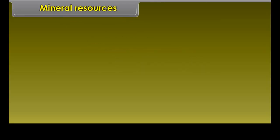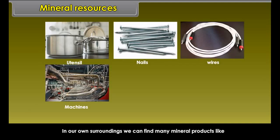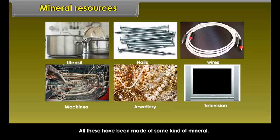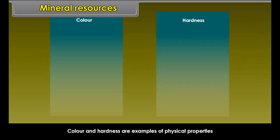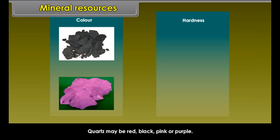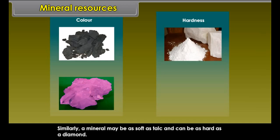Mineral Resources. In our own surroundings we can find many mineral products like utensils, nails, wires, machines, jewelry and television. All these have been made of some kind of mineral. What are Minerals? Minerals are the natural substances having definite chemical composition and physical properties. Color and hardness are examples of physical properties. Coal is black or brown, quartz may be red, black, pink or purple. A mineral may be as soft as talc and can be as hard as a diamond.